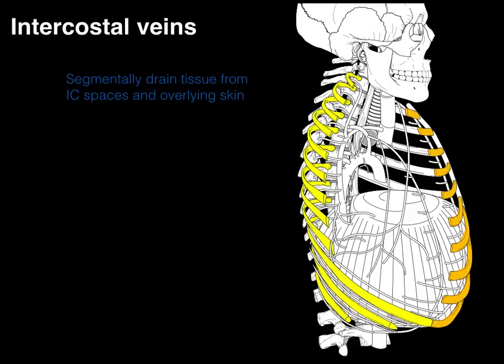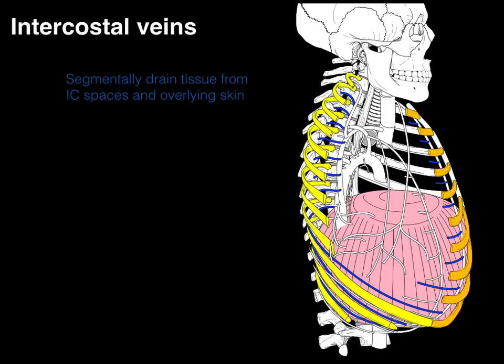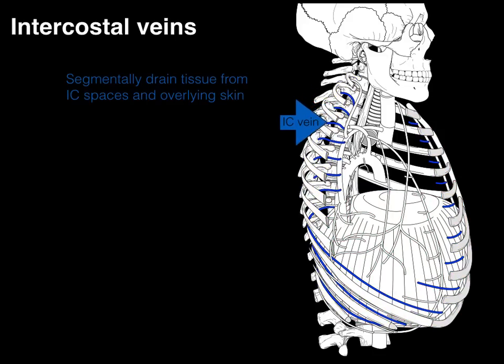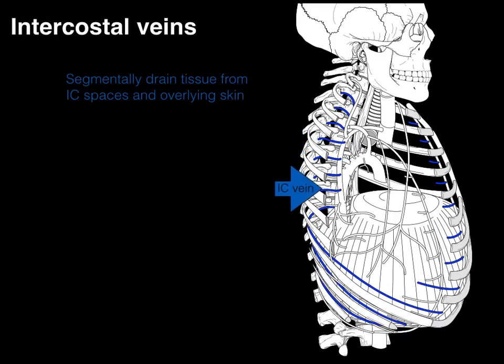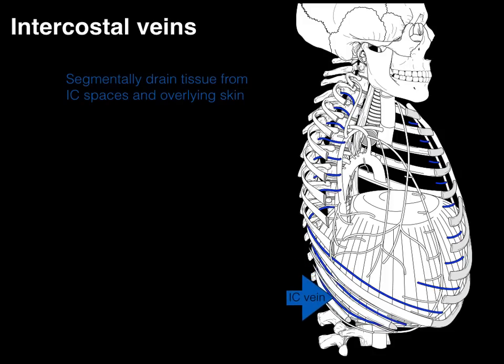In yellow are the ribs, and in orange are the costal cartilage, which articulate the ribs to the sternum. In pink is the diaphragm for orientation. In blue are our intercostal veins — the upper intercostal veins showing the front and the back, but not the middle, just to keep the picture clear. You can see the entire intercostal veins along the bottom, and segmentally all the way down on each side we have these intercostal veins that fill each of the intercostal spaces.